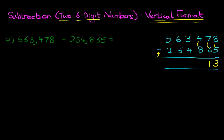Four minus eight — because four is smaller than eight we cannot do this. We're going to take one from the column to its left, the thousands column. So let's cross out the three — three minus one is two — and the one we have taken we're going to add to the hundreds column, so the hundreds column now reads fourteen minus eight.